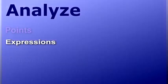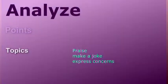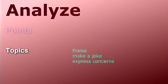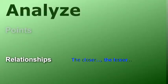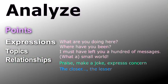To sum up, in terms of expressions, we've got 'you look lovely' and 'beautiful eulogy.' You can also use exclamatory sentences such as 'how nice of you' or 'what a beautiful person you are.' Next, topics: you can praise, make a joke, and express concerns — of course, you should consider the context. Lastly, relationships: if you're talking to someone you're very close with, it's not necessary to start with an icebreaker. There are actually millions of ways to start a conversation, so please don't be limited to what we just covered. If you interpreted these scenes in a different way, you're always welcome to leave a comment.